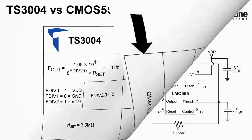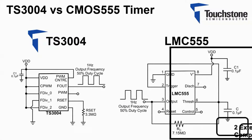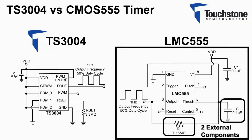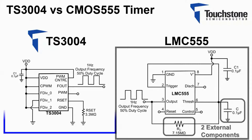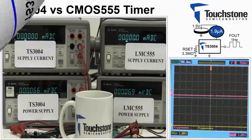Now let's take a look at both circuit schematics side-by-side. Notice the CMOS 555 circuit requires two external components, whereas the TS3004 requires only one external component to set the output frequency. Now let's take a look at the performance of the timer side-by-side in the lab.